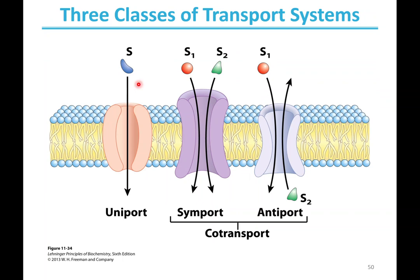There are three classes of transport systems based on directionality. A uniport moves one molecule in one direction. Co-transport moves two molecules at once: a symport moves two molecules in the same direction, while an antiport moves two molecules in opposite directions.